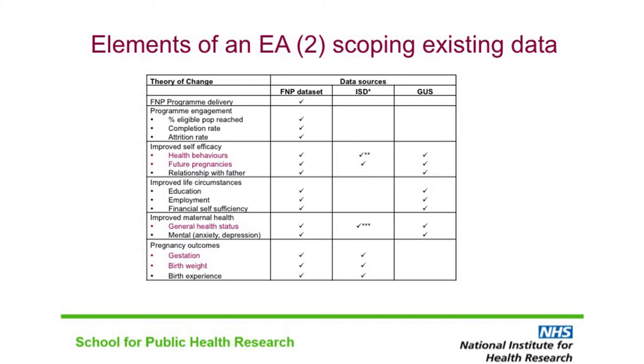We also learnt during the workshops that the way the FNP had been delivered in Scotland created a natural experiment. The recruitment of teenage first-time mothers into the programme stopped and started at different times in different areas, according to the capacity of trained nurses in those areas. This meant that women who gave birth during periods of recruitment should be very similar to women in their area who gave birth shortly before or after the recruitment period. Once enough women had been through the programme, comparing outcomes in the two groups should give a precise and unbiased estimate of the impact of the programme, at least for those outcomes measured in all pregnancies in Scotland.